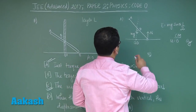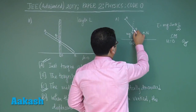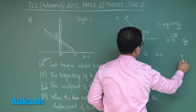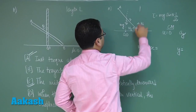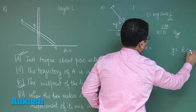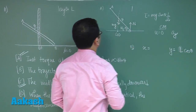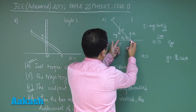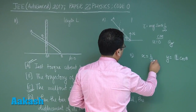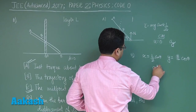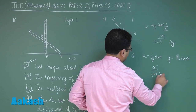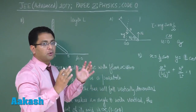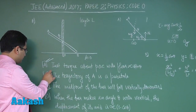For the coordinates of point A, the angle with the horizontal is pi by 2 minus theta. The y-coordinate of A is L cos theta, and the x-coordinate is L sin theta minus L by 2 sin theta, which equals L by 2 sin theta. So we get x² / (L/2)² + y² / L² = 1, which is an ellipse. Therefore option B is incorrect — the trajectory is elliptical, not a parabola.